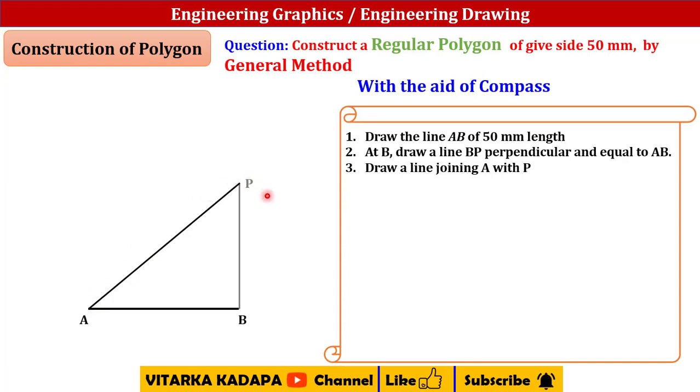With center B and radius equal to AB length, I am going to draw a quadrant called AP. This AP line is also a construction line.